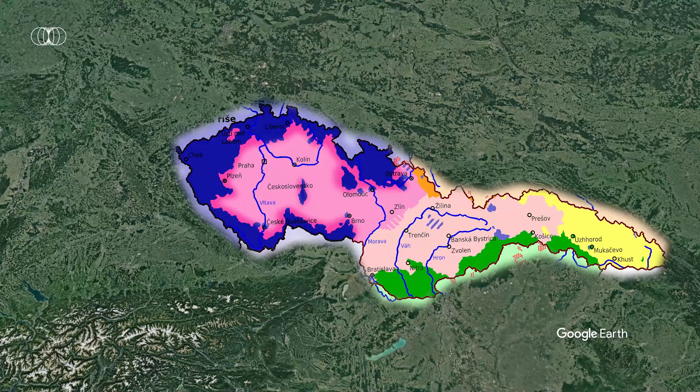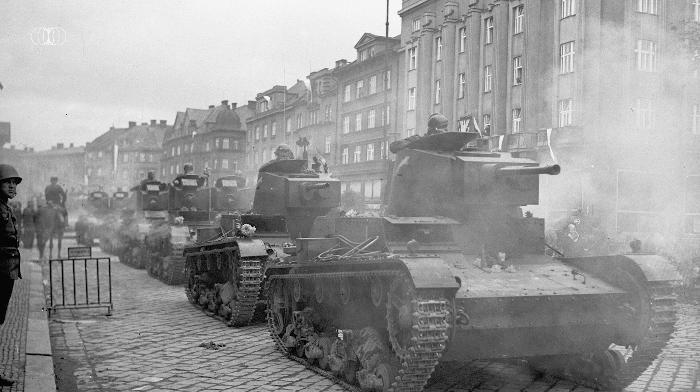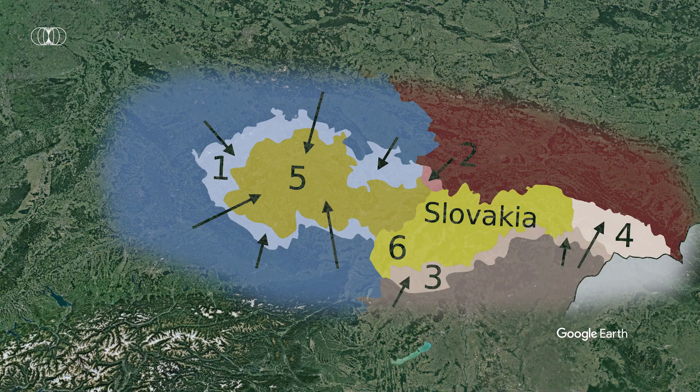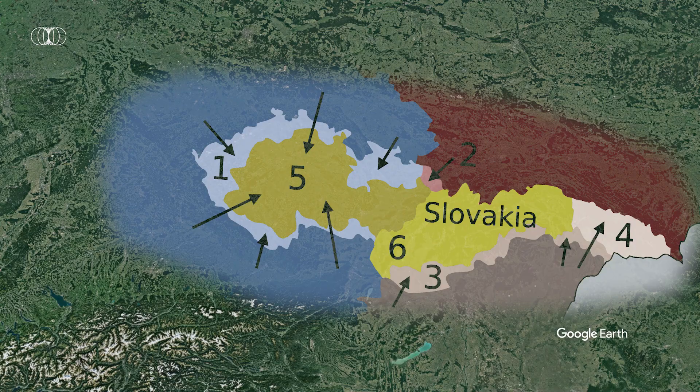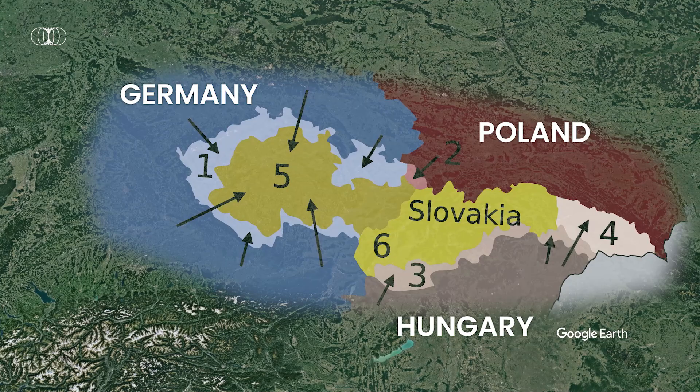Sensing weakness, Poland and Hungary seized their opportunity as well — Poland annexing parts of the northern border regions and Hungary taking the south of the Slovak lands, including its second largest city, Košice. In a matter of months, Czechoslovakia was reduced to only a husk of its former size.